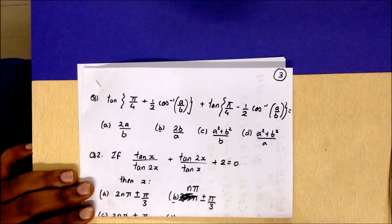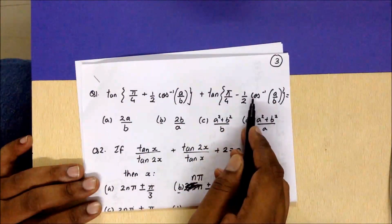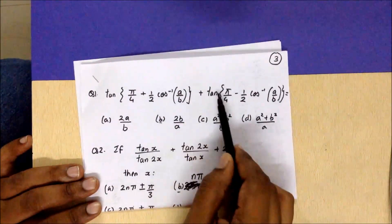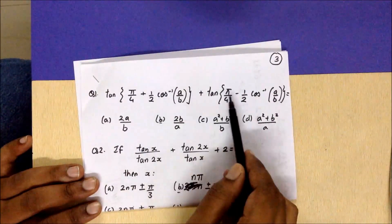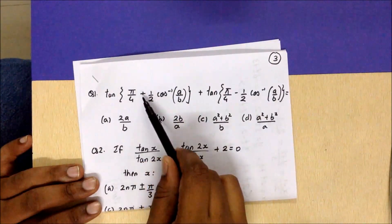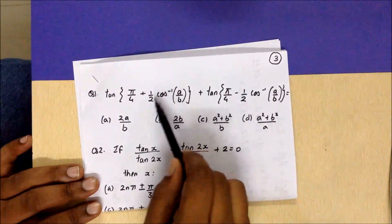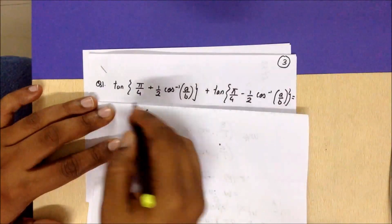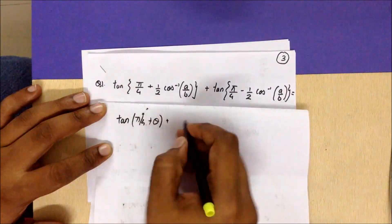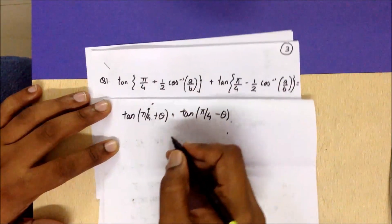The first question gives us tan of something plus tan of some other thing equal to something. If you observe, we have the same angles inside the tan, differing only by a minus and a plus sign. This is basically the formula for tan(π/4 + θ) plus tan(π/4 - θ). So we take this as some theta and solve for it.